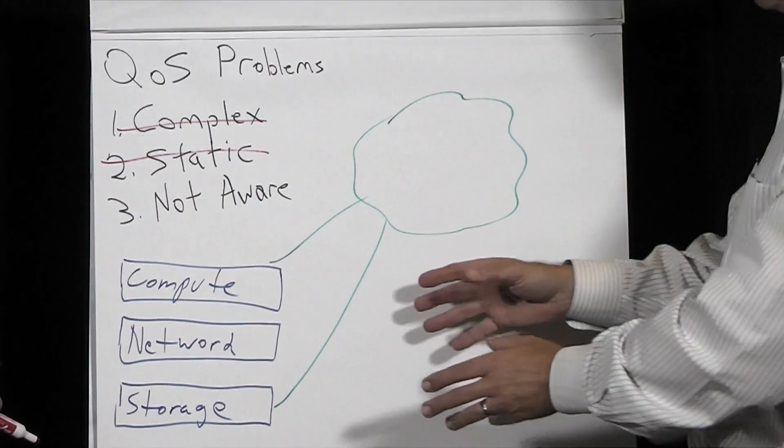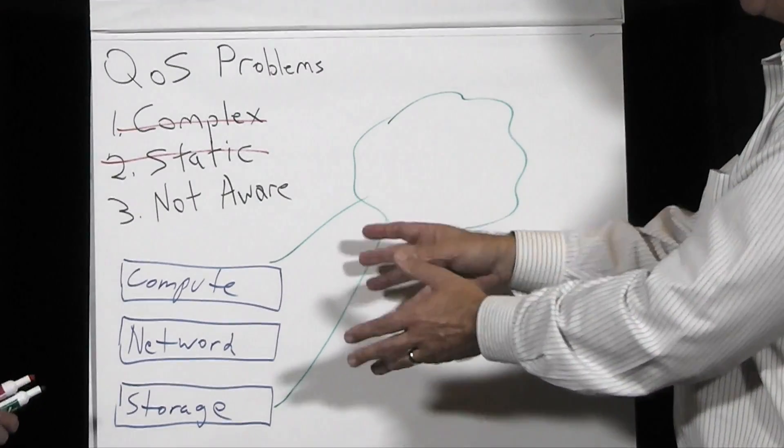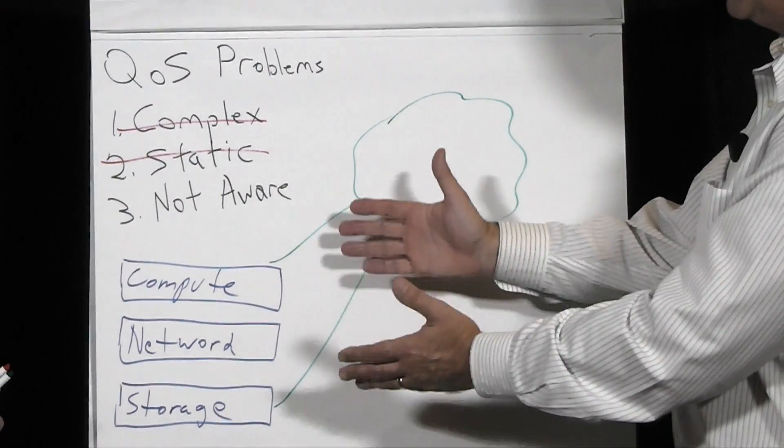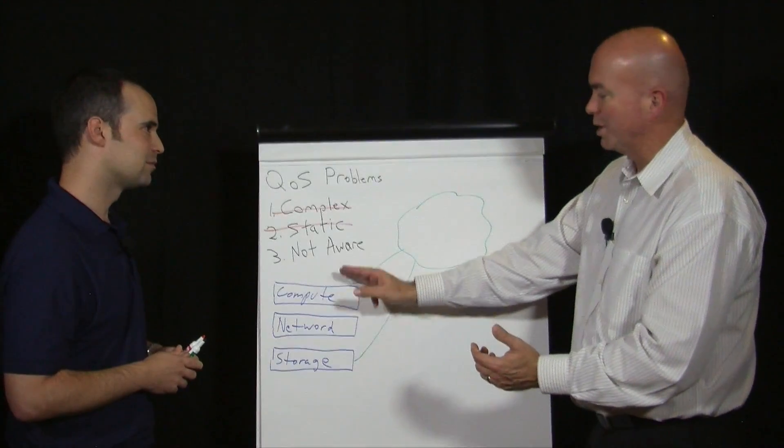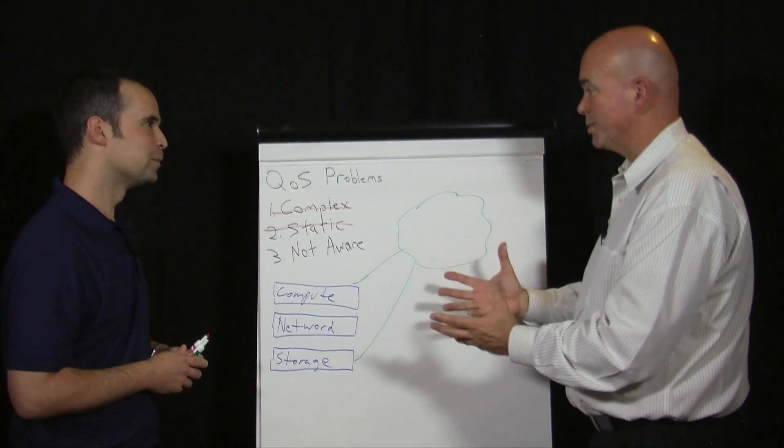All right. Now the big one. I caught your point earlier. All of these things are collecting thousands of data points, but to your point, they don't really, I always laugh when I hear about storage QoS and there's these other big things in the middle that really can cause a problem. So how do we get those all talking together?